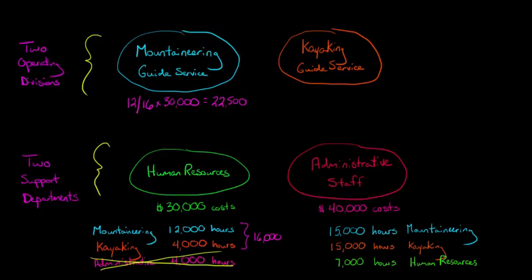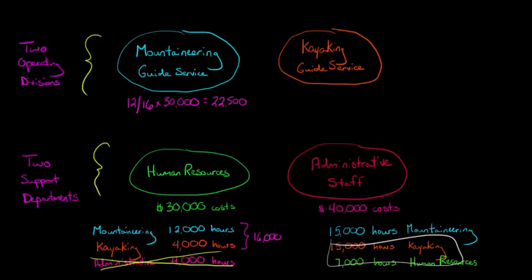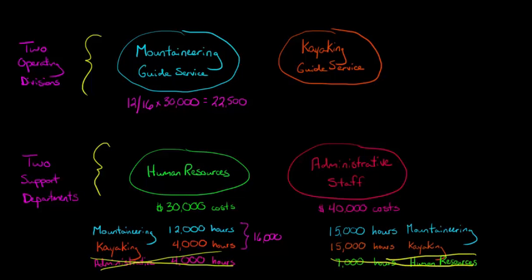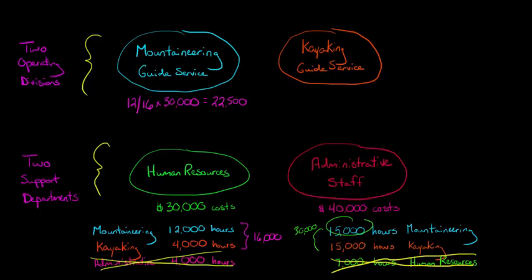Now let's look at the administrative staff for mountaineering. The mountaineering division uses 15,000 hours of the admin staff's time, kayaking uses 15,000 hours, and the HR department uses 7,000 hours — but again, we're going to ignore that. Adding mountaineering and kayaking together gives us 30,000 total hours. Mountaineering's share is 15,000 divided by 30,000, multiplied by the $40,000 total admin staff costs, which equals $20,000.